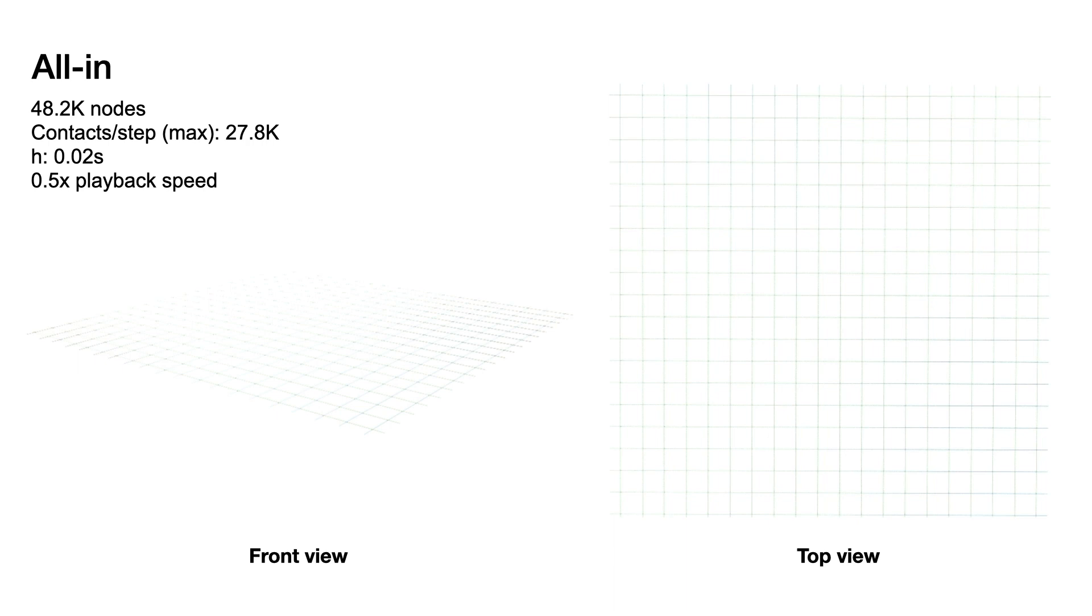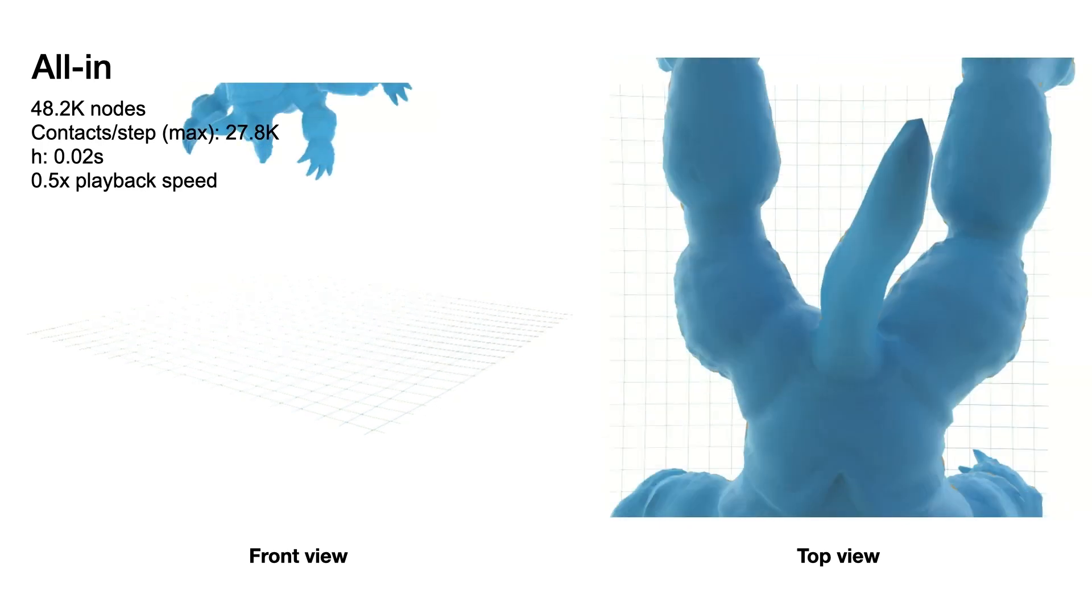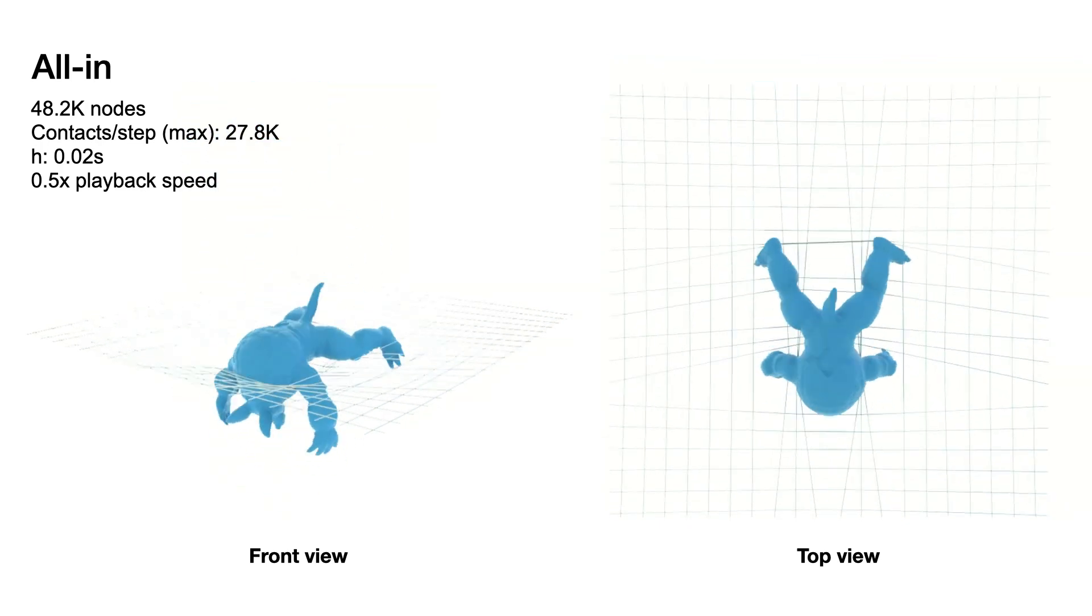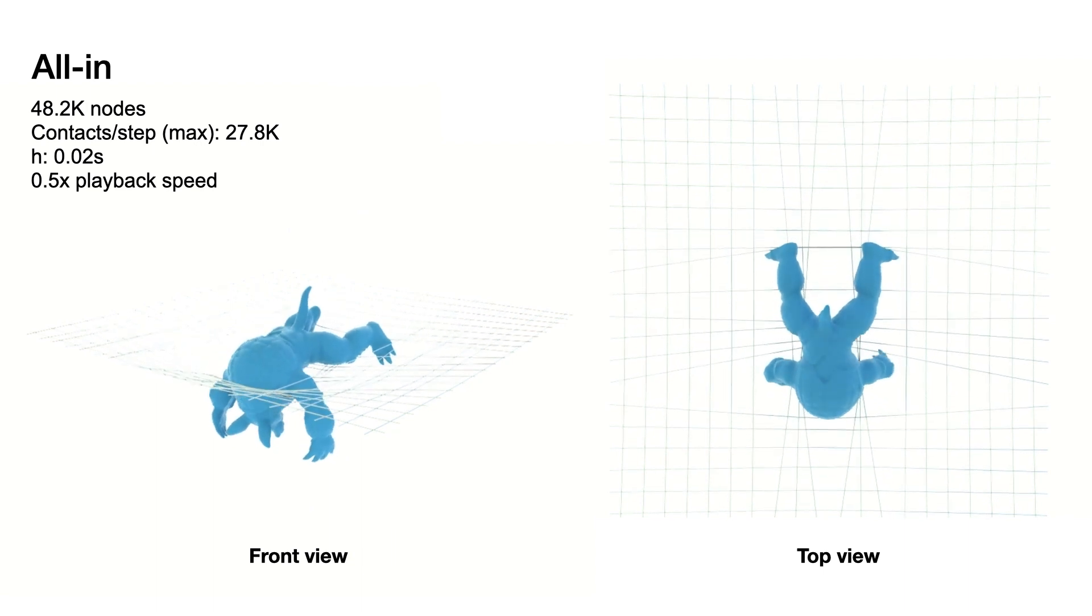Likewise, CIPC seamlessly couples a wide range of codimensional models directly via accurate frictional contact. Here we combine all codimensions with tight coupling and response. First, we drop an armadillo onto a net formed by interleaved rods, where it gets caught.